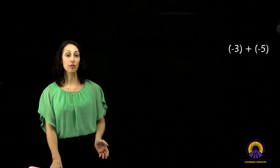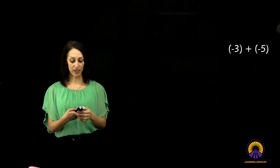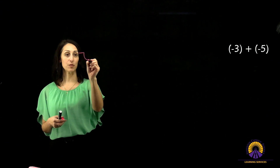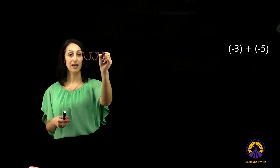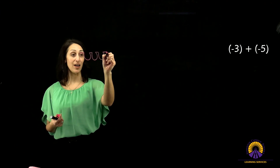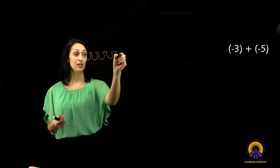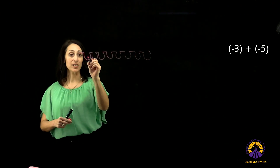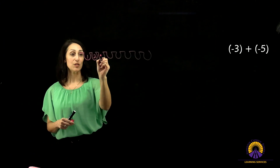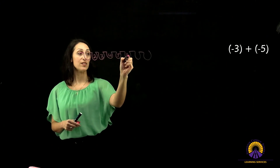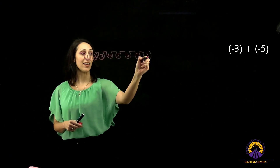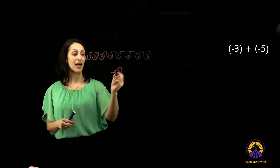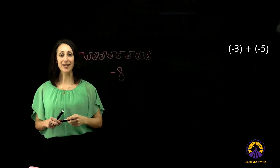What if I were to add two negative numbers together? I'm going to start with my negative three — one, two, three — and add my negative five — one, two, three, four, five. I can add them all together: one, two, three, four, five, six, seven, eight. I end up with eight holes, so I'm going to know that will be a negative eight.